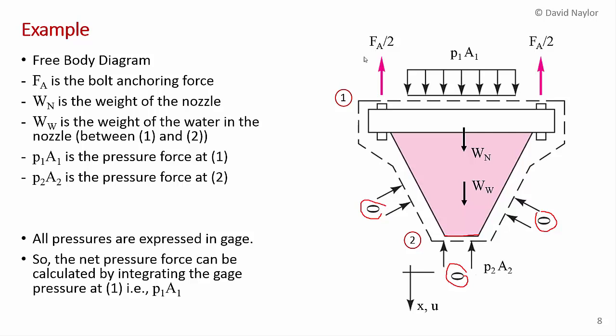We have the bolt forces here. And I've split it into two just because we have two bolts in the diagram. So FA is the bolt anchoring force. That's what we're after. We're not going to ignore gravity. So I've added the weight of the nozzle here. And I've added the weight of the water downwards.